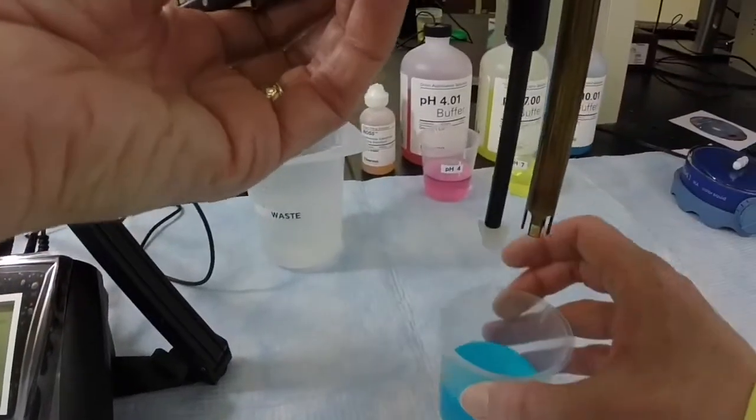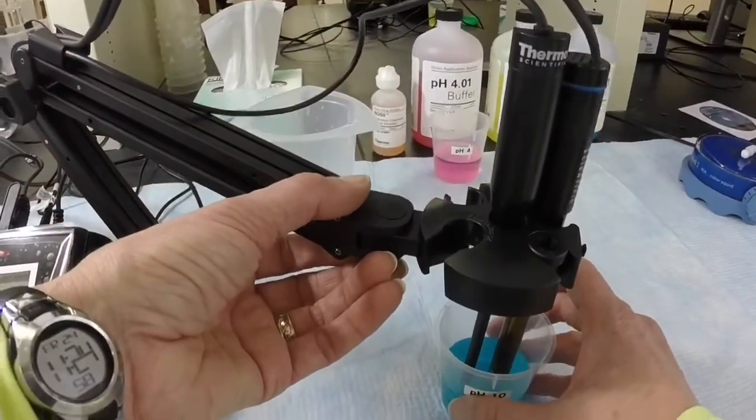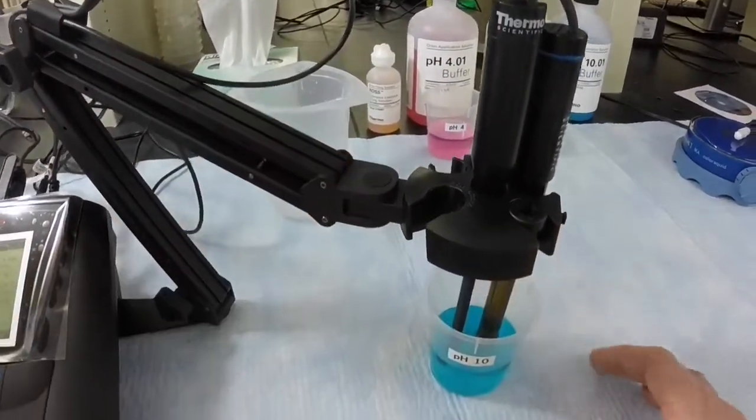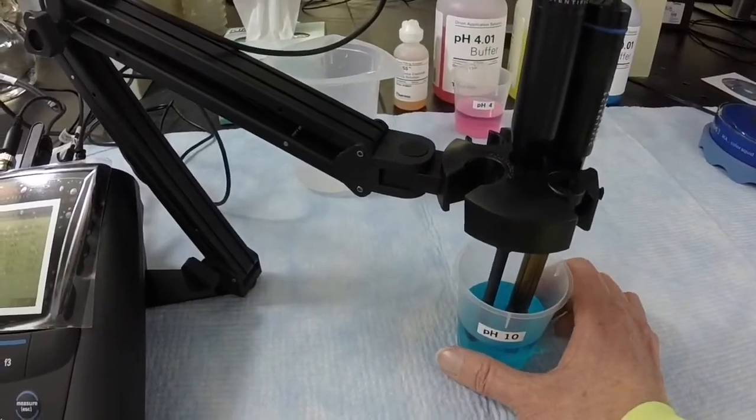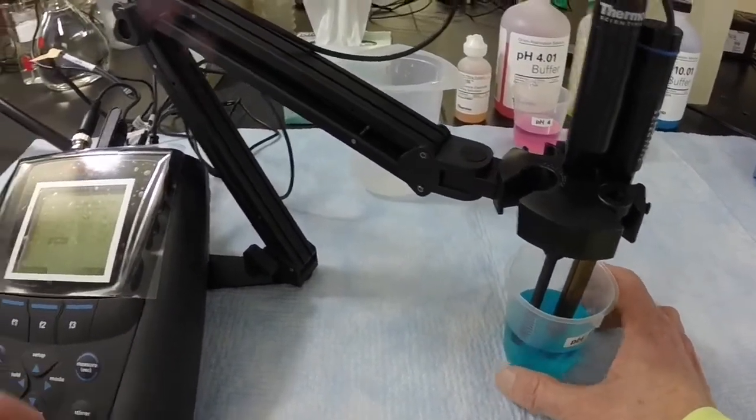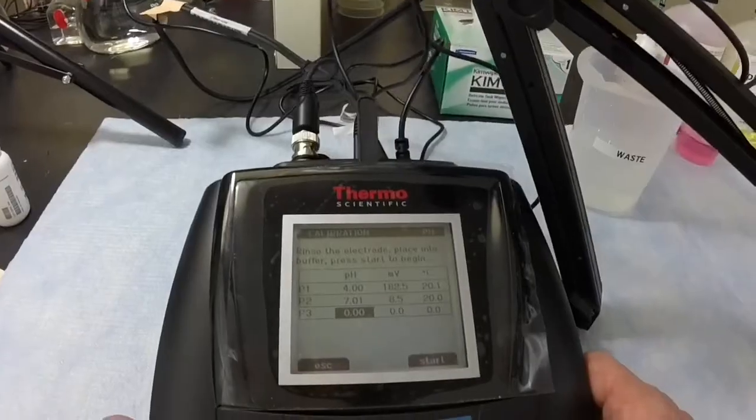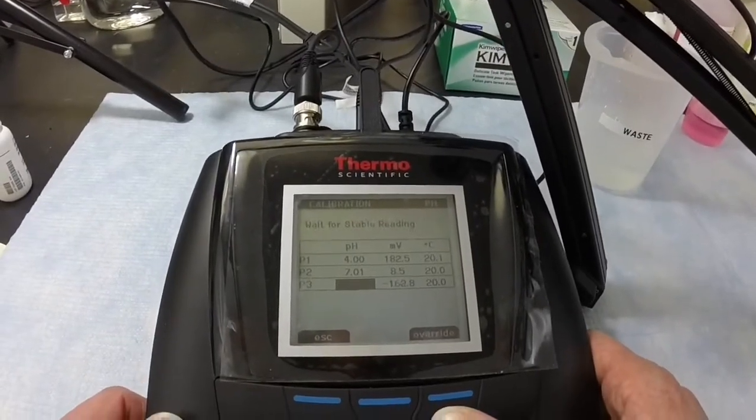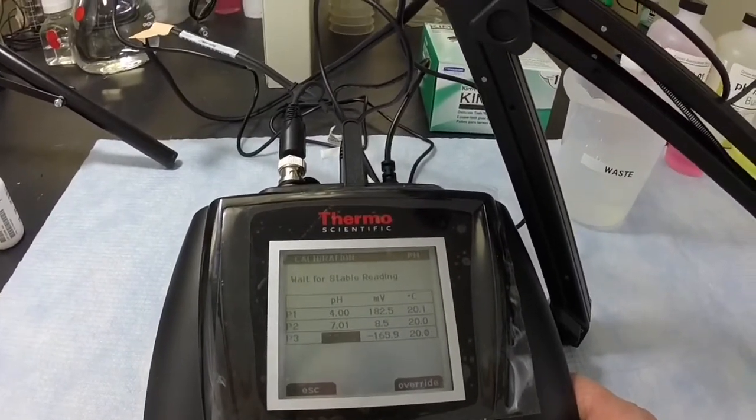Insert the electrode and stirrer into the third buffer. In this case, we're using pH 10. Press the start button. Again, the reading will blink until it is stable.